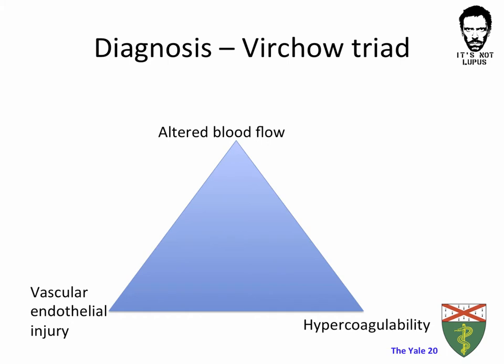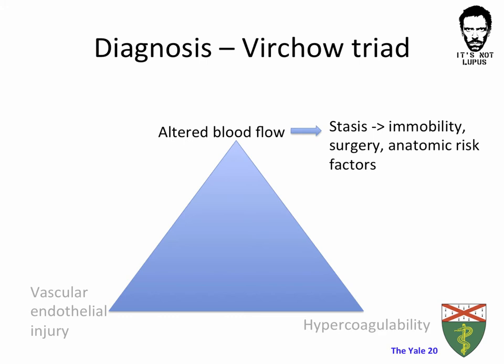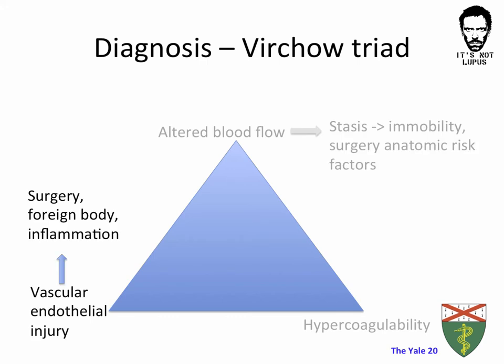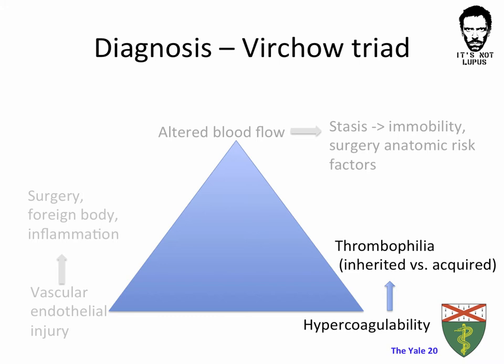As you know from medical school, there is the famous Virchow's triad that constitutes three key components important for blood clot formation. Number one is altered blood flow — this basically comes down to stasis, so immobility, surgery, and anatomic risk factors like May-Thurner syndrome are risk factors that cause blood stasis and predispose to clot formation. The second component is vascular endothelial injury, as seen in surgery, chronic inflammatory states, or a foreign body within the vascular system like a central venous catheter. The third key component is a hypercoagulable state, which can be in the form of inherited or acquired thrombophilia.